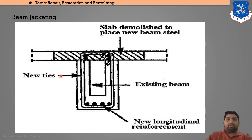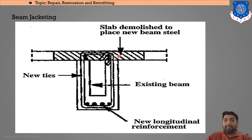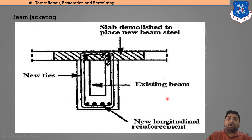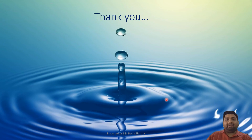Beam jacketing follows the same phenomenon: steel bars are jacketed around the original beam and tied using splices. The slab above is demolished to place the new beam — the hatched portion is the new beam placed around the original — covering the whole beam with the jacket. This concludes repair, retrofitting, and rehabilitation of structures. The next session will cover fundamentals of vibrations of buildings.